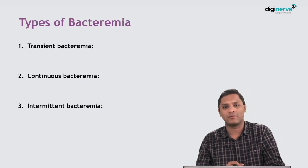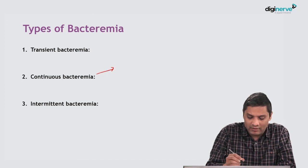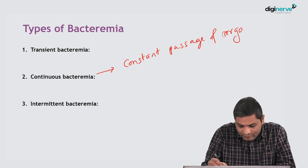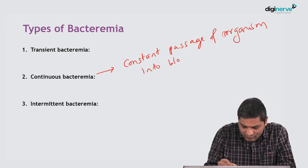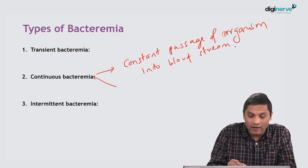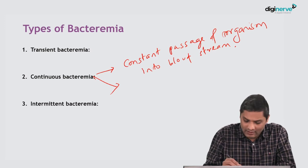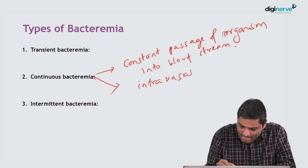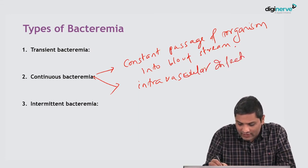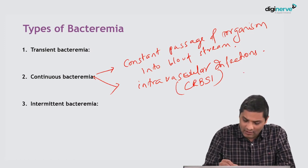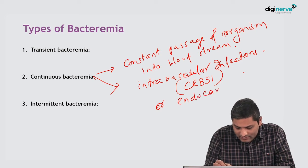The second type is Continuous Bacteremia, where there is a constant flow — constant passage — of microorganisms into the bloodstream. This usually happens when there is a constant source of infection inside the blood vessels, either intravascular infections or inside the heart. For example, catheter-related bloodstream infection (CRBSI) or endocarditis are situations that may lead to continuous Bacteremia, with continuous passage of organisms into the bloodstream.